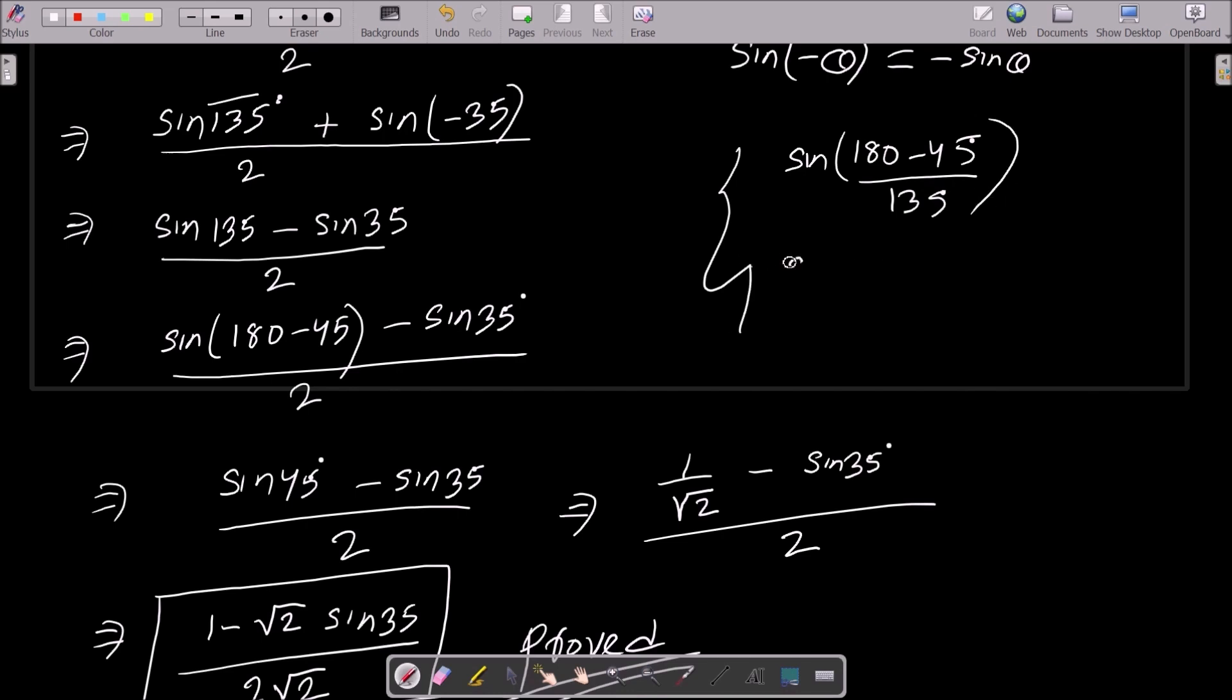And the next is sin 180 minus theta that is equal to sin theta. And here sin 180 minus 45 that is equal to sin 45 degree. And the value of sin 45 that is equal to 1 by root 2. So here you can see sin 45 minus sin 35.